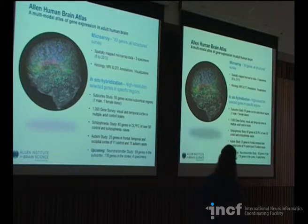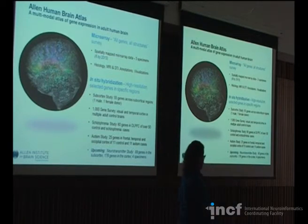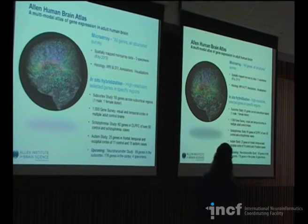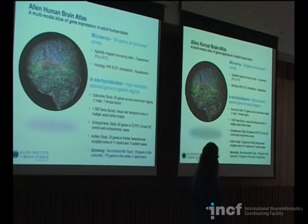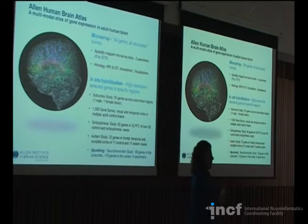There's a subcortex study that has 55 genes in the GABA and glutamatergic pathways across subcortical regions — one male and one female donor for that. There's also a thousand-gene survey that looks specifically at visual and temporal cortex in multiple control brains, with the goal of an N of three for each gene.